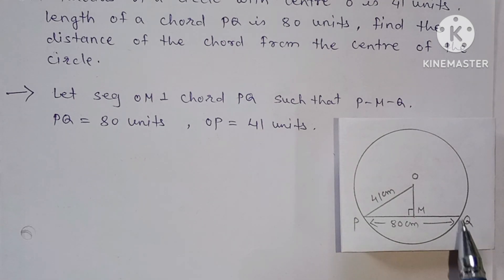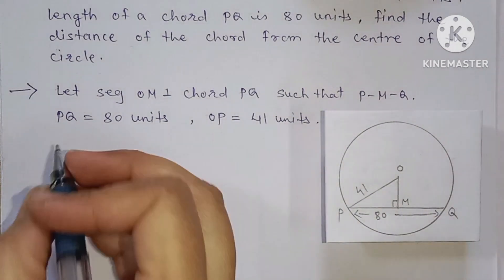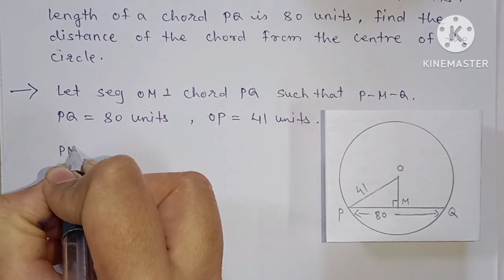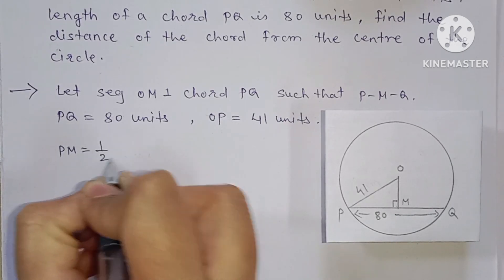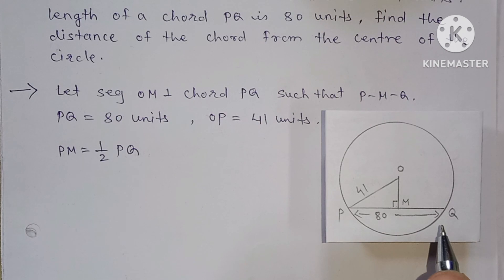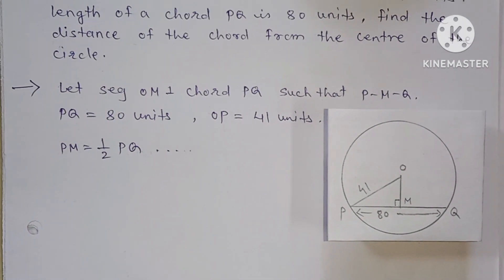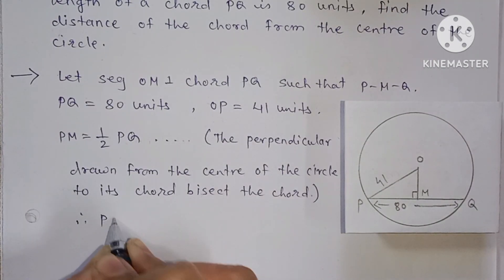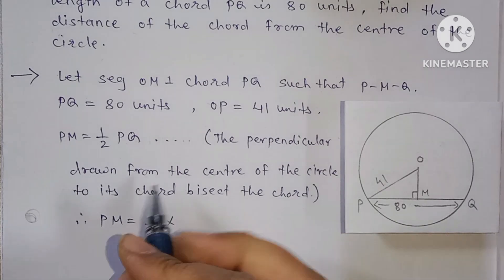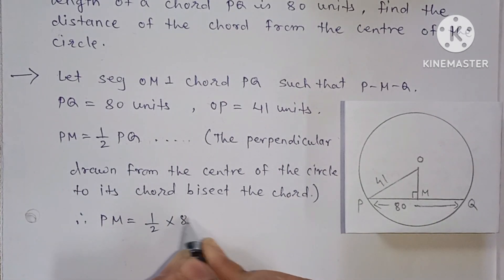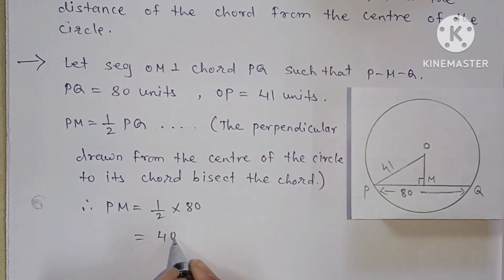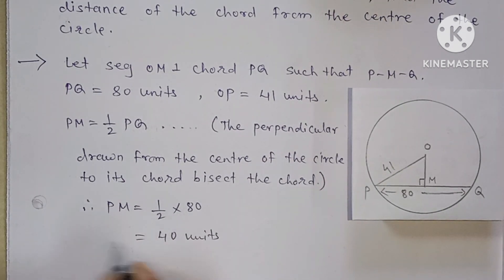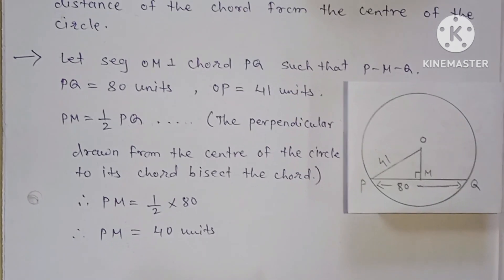Segment OM is perpendicular to chord PQ such that M is between P and Q. PQ is equal to 80 units and OP is equal to 41 units. Now, PM is equal to half of PQ. The reason: the perpendicular drawn from the center of the circle to the chord bisects the chord. Therefore, PM is equal to half of 80, which is 40 units.